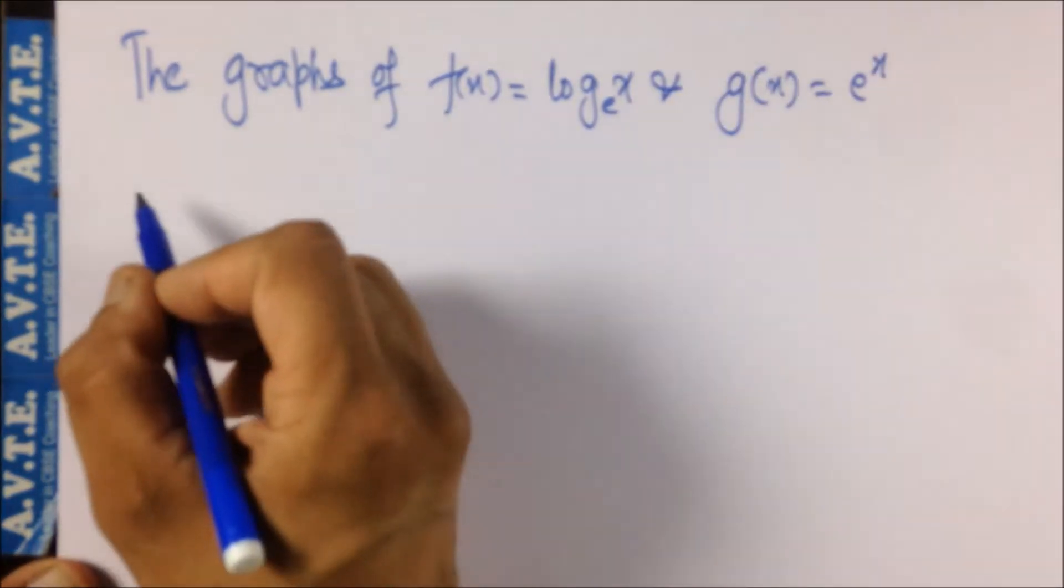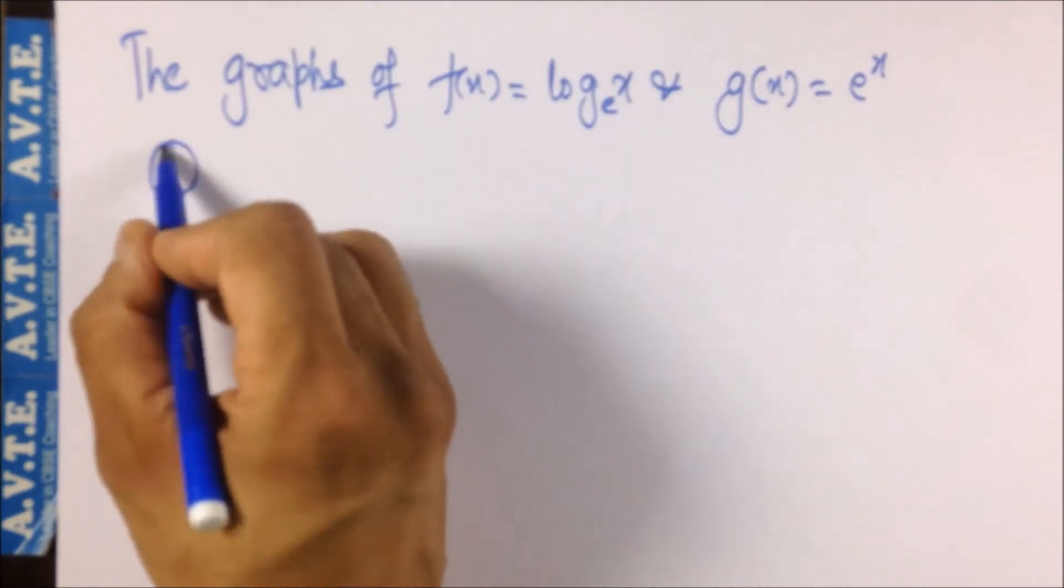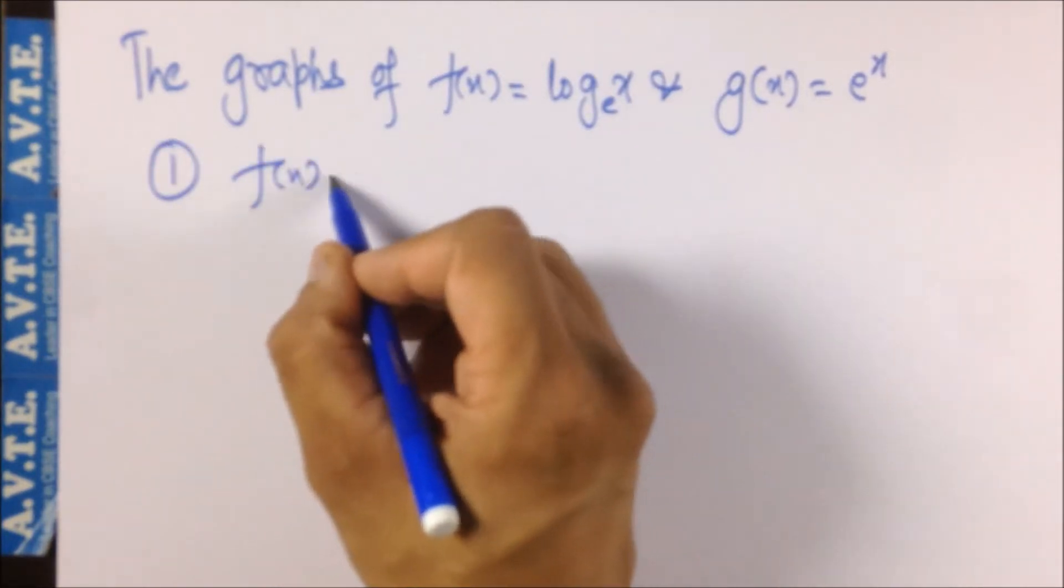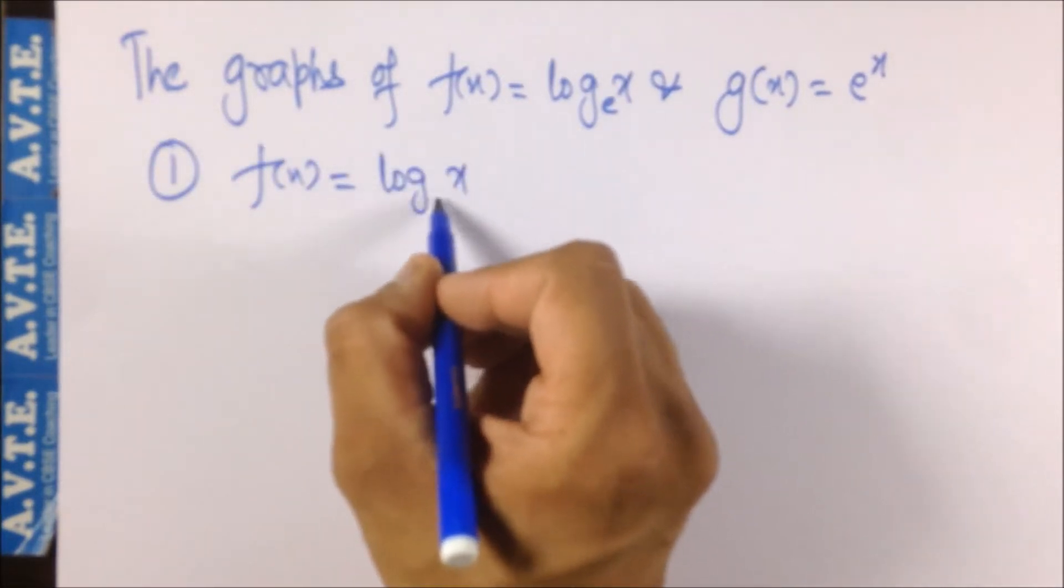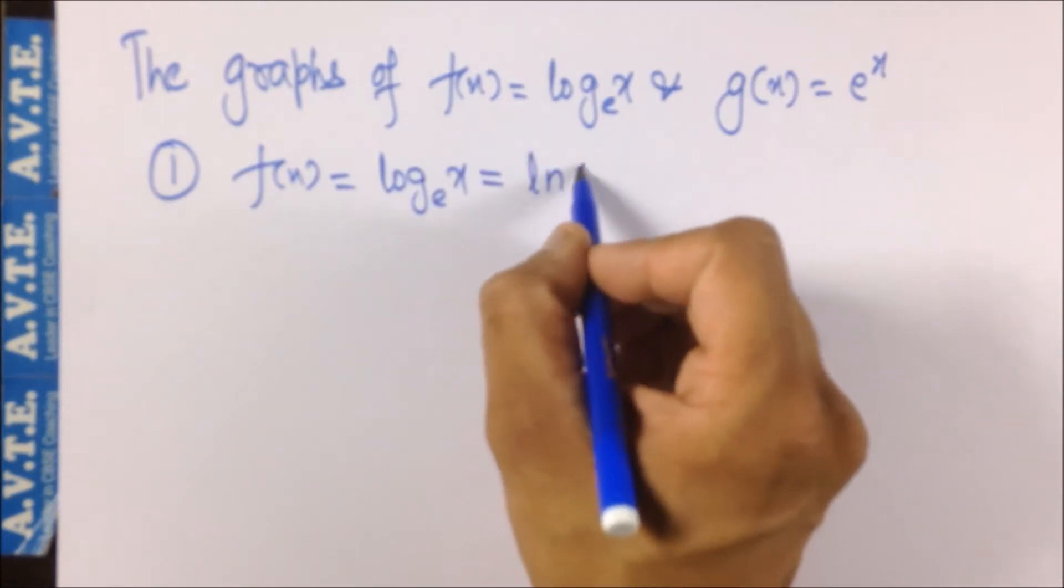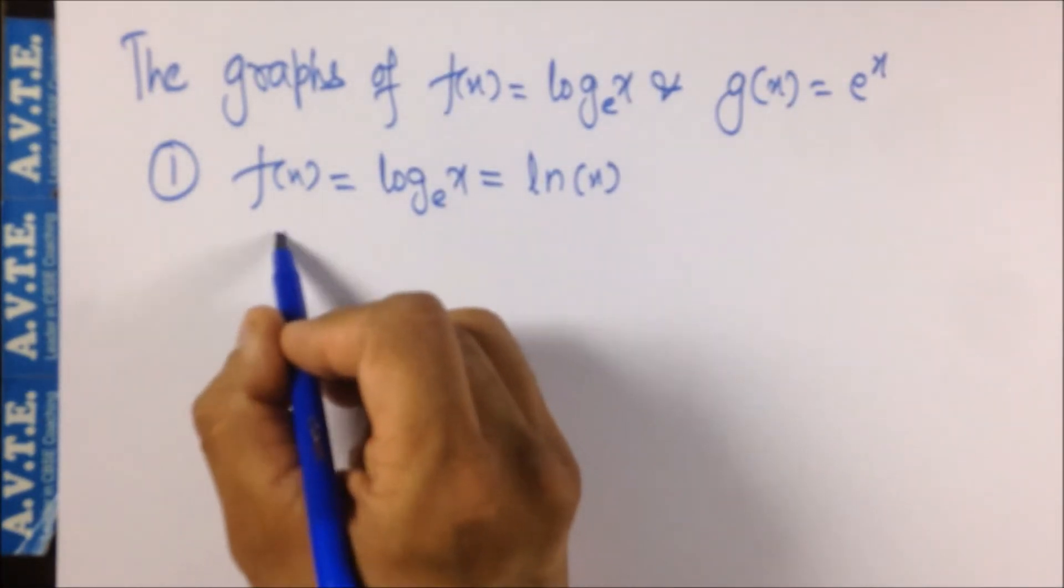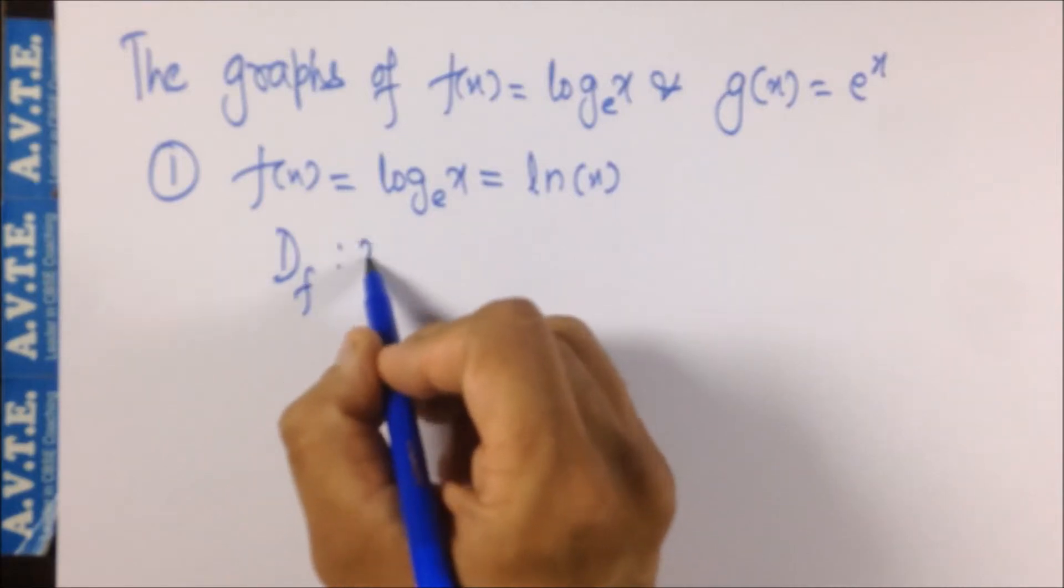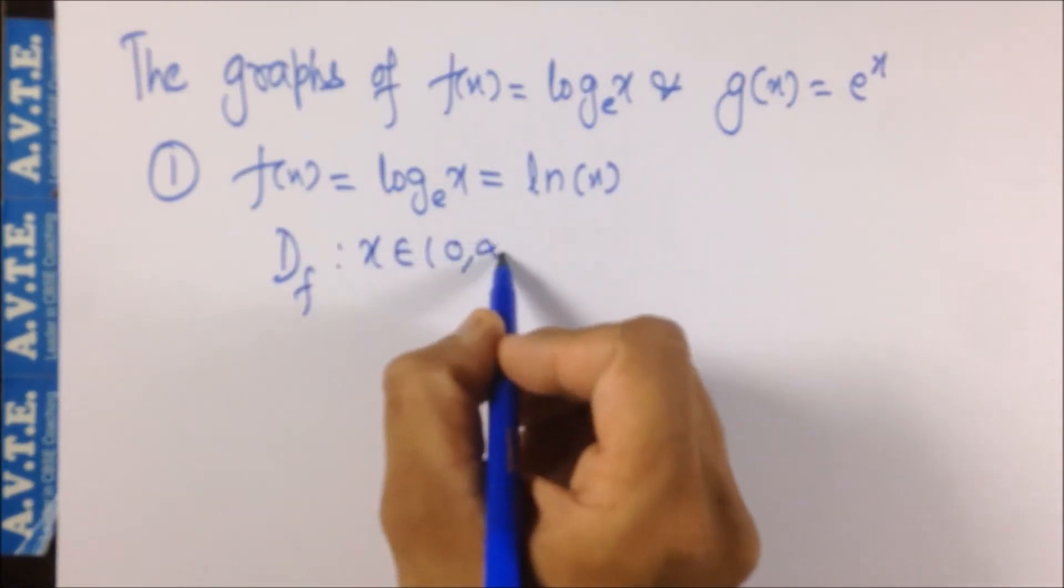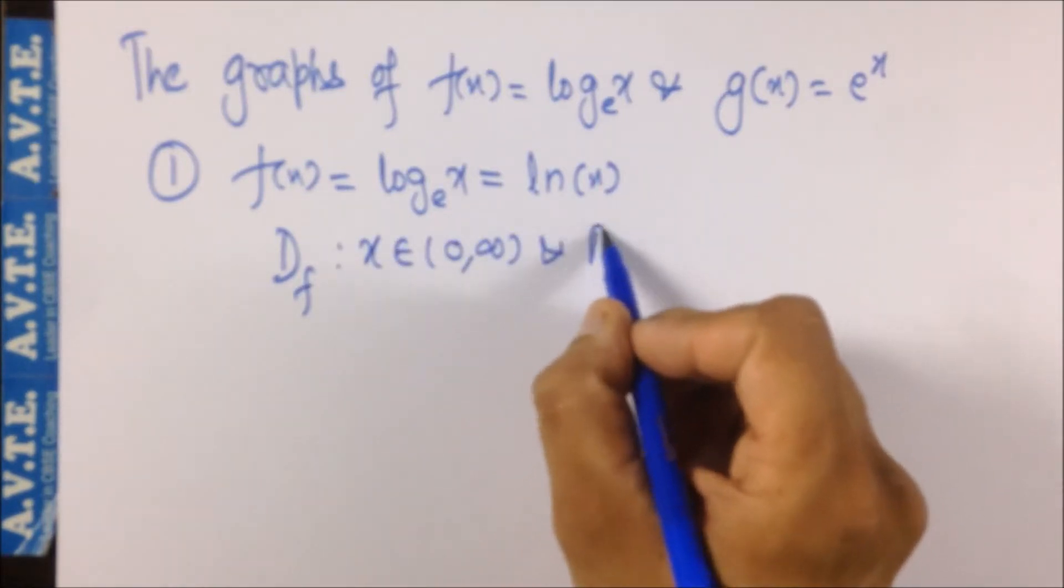I'm firstly taking log x. Log x base e is also known as ln x. When you put ln, then there is no need to put the base as e. The domain for this function is the set of positive values and the range is minus infinity to infinity.